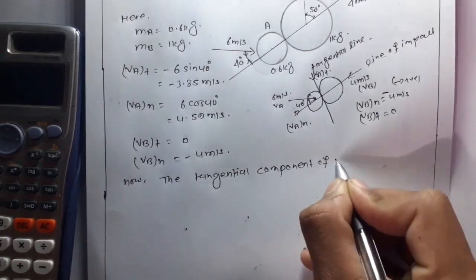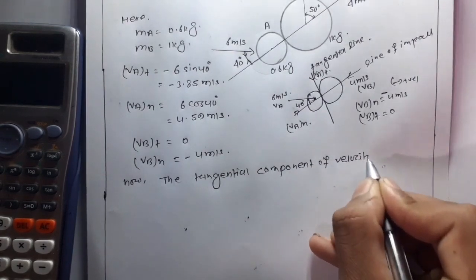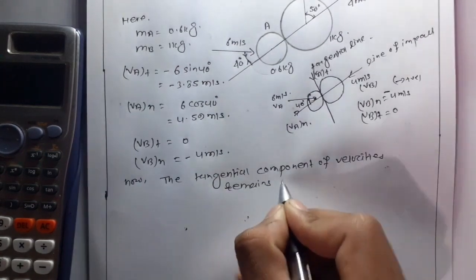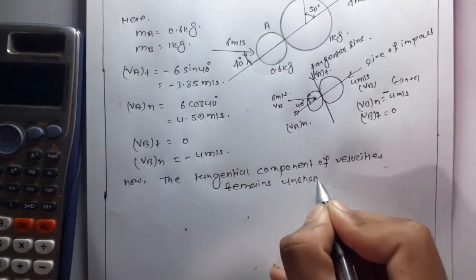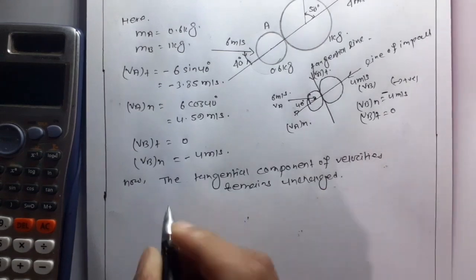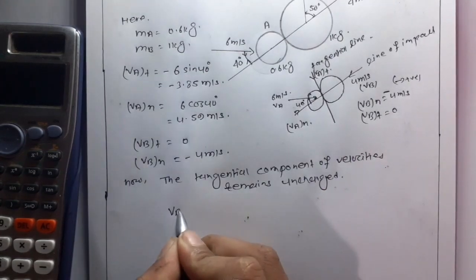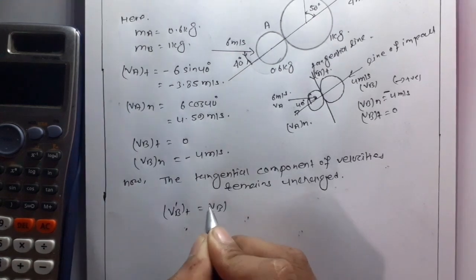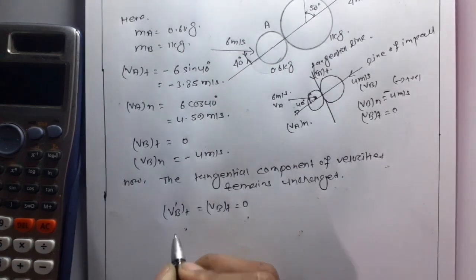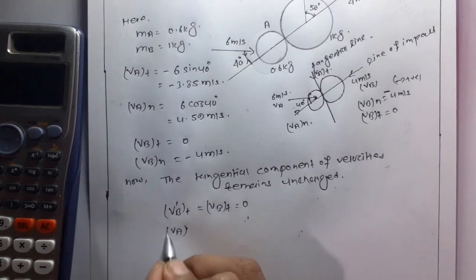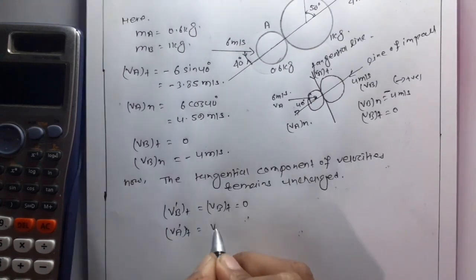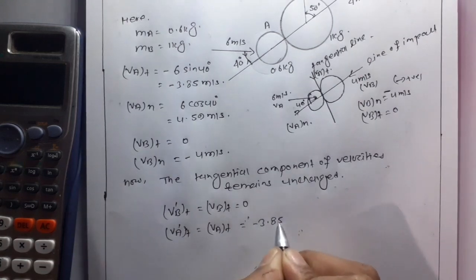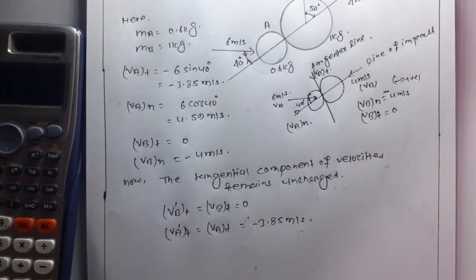The tangential component of velocity remains unchanged. Therefore, VB'T = VBt = 0, and VA'T = VAt = -3.85 m/s.